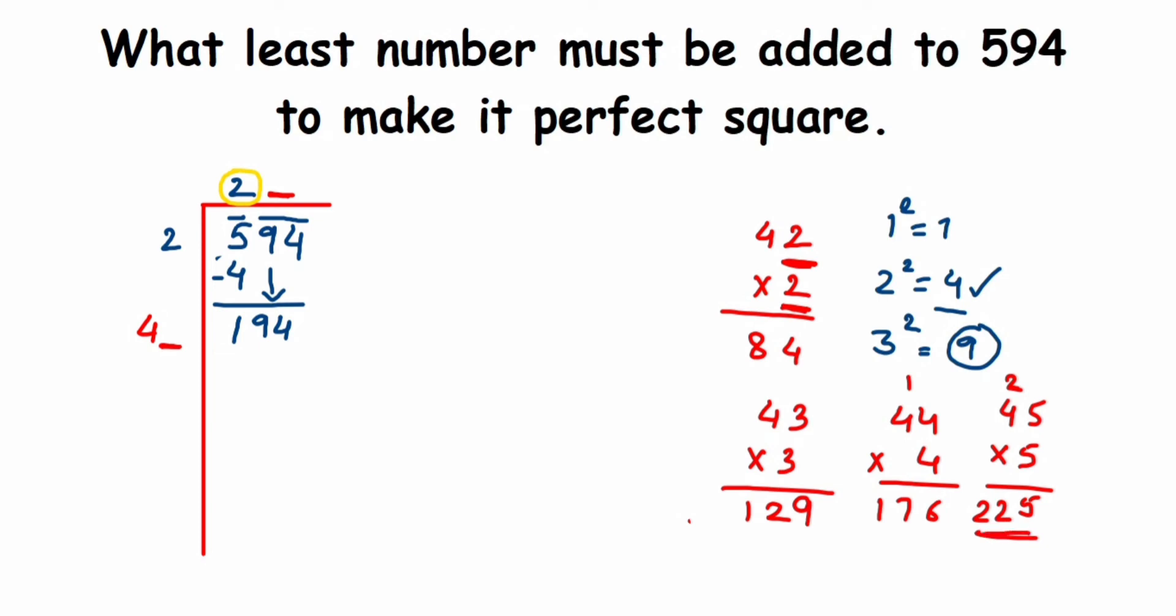So we'll go with 176. 44 times 4 is 176, so I'll write down 176. Now subtract it. Once you subtract, we'll get 18 as a remainder.